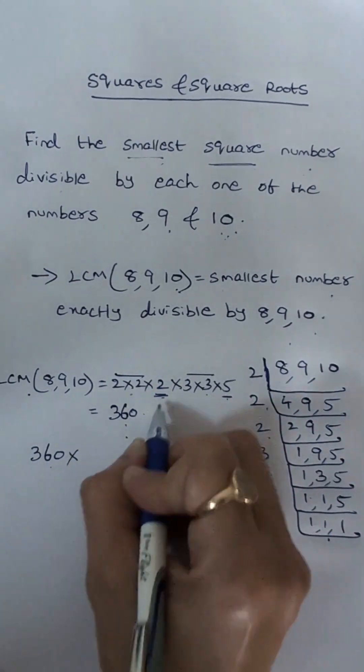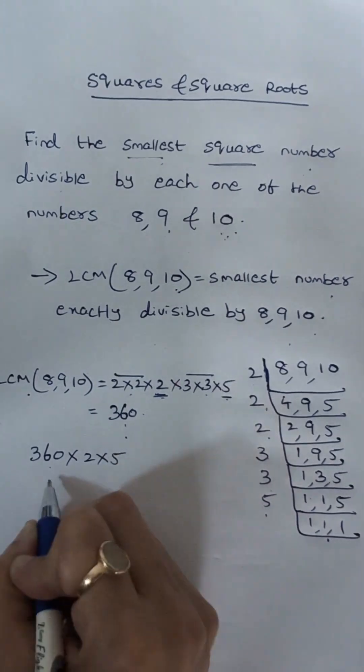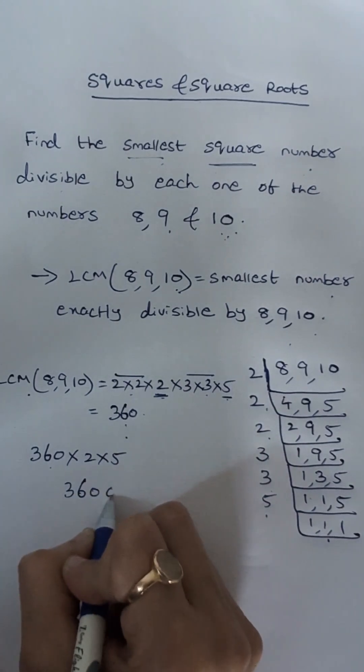So to make this a perfect square we have to multiply this by 2 into 5 so 360 into 10 is 3600.